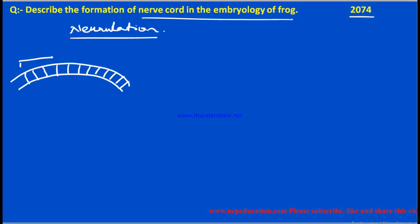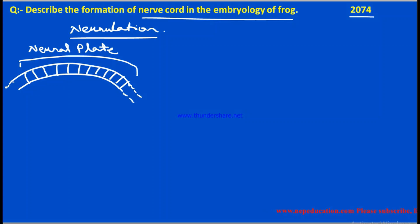The differentiated part of the ectoderm forms the nervous system. This differentiated part is called the neural plate. This part of the ectoderm becomes thick. The neural plate is where the ectoderm is attached — the ectoderm remains attached at this region, and it is all one part of the ectoderm. The ectoderm is the junction point.